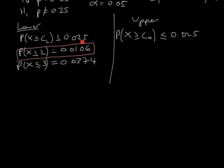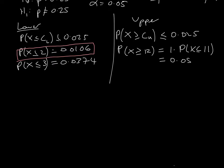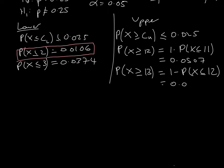Moving on to the upper tail, the probability that X is greater than or equal to 12 equals 1 minus the probability of X less than or equal to 11, giving 0.0507 — that's above 0.025. The next value: the probability that X is greater than or equal to 13 equals 1 minus the probability of X less than or equal to 12, which gives 0.0216. So our upper critical value is X = 13.